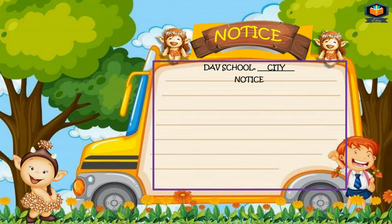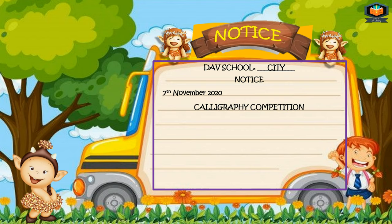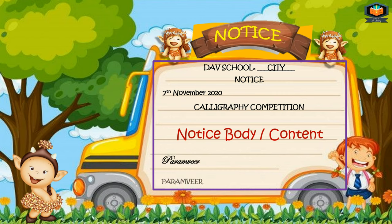Now see the proper format of a notice. At the starting: school name with city, then the word NOTICE in capitals, then date on the left side, then heading, then content, then signature, name and designation.